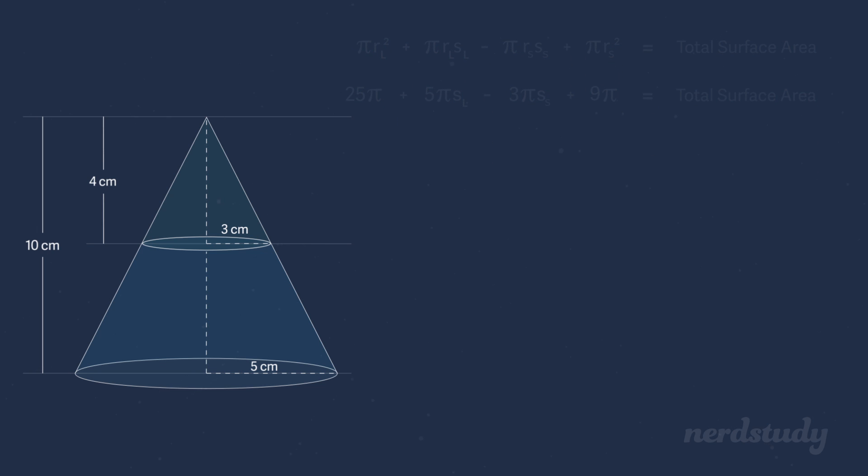We're given both the height and the radius of the small and large cones. So we can use the Pythagorean theorem to find the slant heights for both of them, starting with the large cone. a squared plus b squared equals c squared. We plug in our values for a and b with 5 and 10, respectively. We get 5 squared plus 10 squared equals c squared.